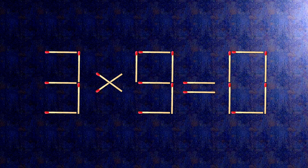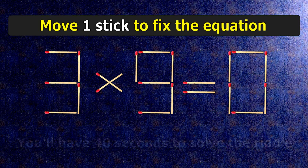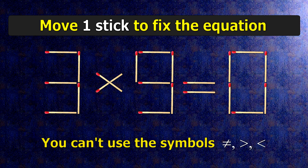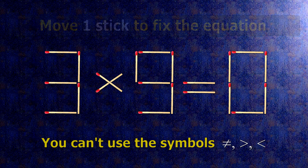We have the equality: three times nine equals zero. Our equality is wrong. We need to move one match to make our equality correct.